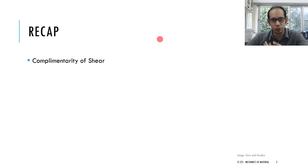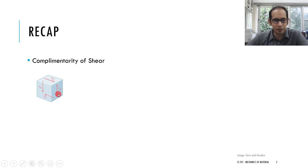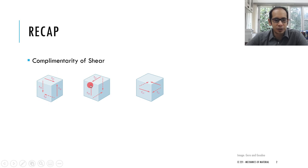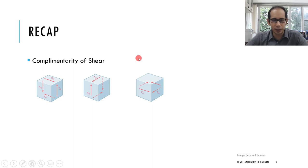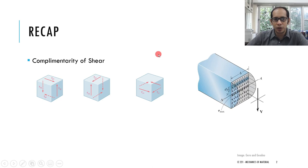We used this idea to derive the shear formula initially. In one face you can have shear, and complementary shear develops in the other faces as well. For example, if you have a shear stress on one vertical face, you will have complementary shear across all four sides — to maintain both equilibrium of forces and equilibrium of moments.